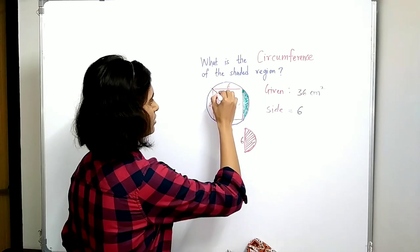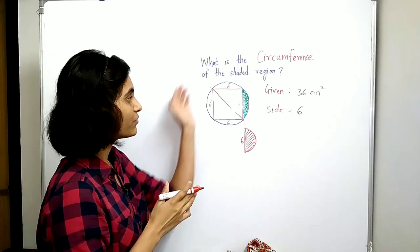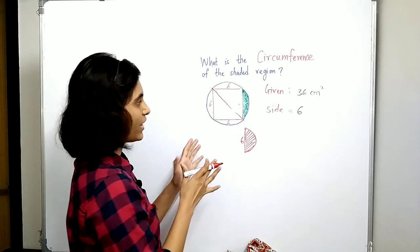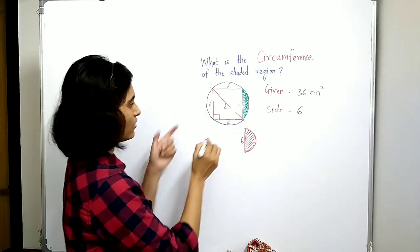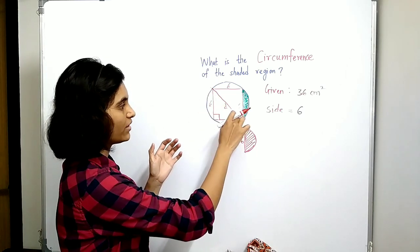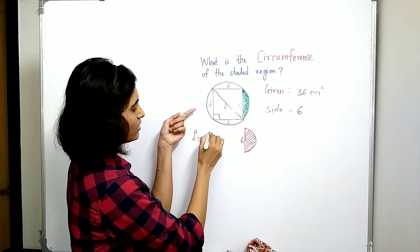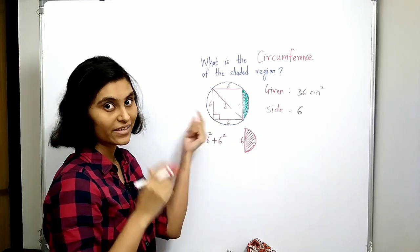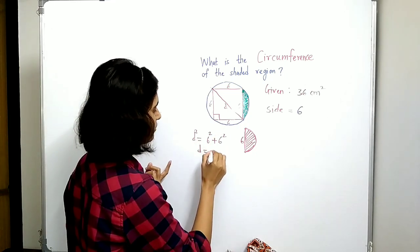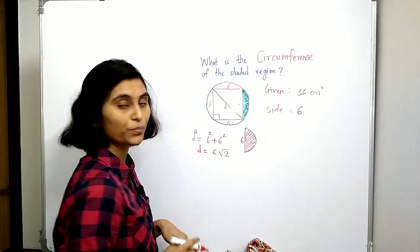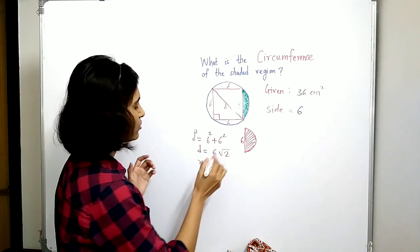We just draw the diagonal of this square, which is nothing but the diameter of the circle. To find the length of this diagonal, let us denote it by d. By Pythagoras' theorem — since this is a square inscribed in the circle with an angle of 90 degrees — we have d² = 6² + 6², so d = 6√2. That means r = d/2 = 3√2.